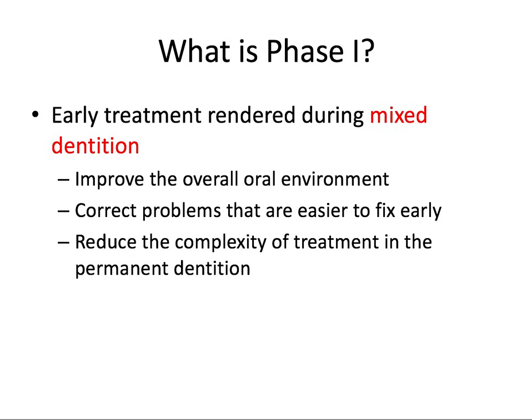So why do we do phase one treatment? There are really three main reasons. Number one is to improve the overall oral environment — for example, if teeth don't have enough room to erupt properly, or if teeth are occluding traumatically against each other. A second reason could be to correct problems that are easier to fix early on, while the sutures are more pliable, while growth is still readily happening, and while patients may be more compliant at an early age.